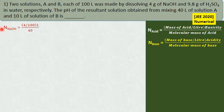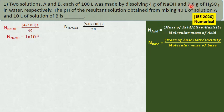Normality of NaOH: 4 grams dissolved in 100 liters, acidity is 1, molecular mass is 40. On simplification, it gives 1×10⁻³ normal. Similarly, for sulfuric acid: 9.8 grams dissolved in 100 liters, basicity is 2, divided by molecular mass, giving 2×10⁻³ normal.